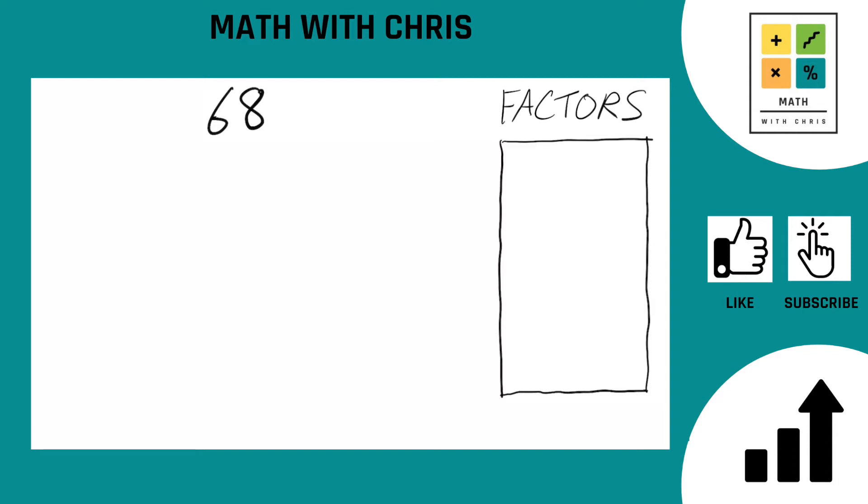First thing we always do is bank the two easiest numbers. That's of course one and the number itself, 68.